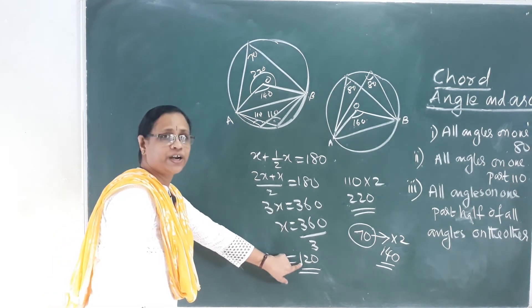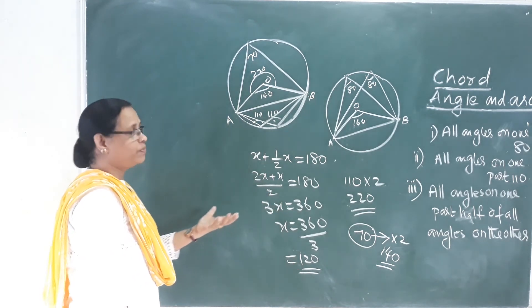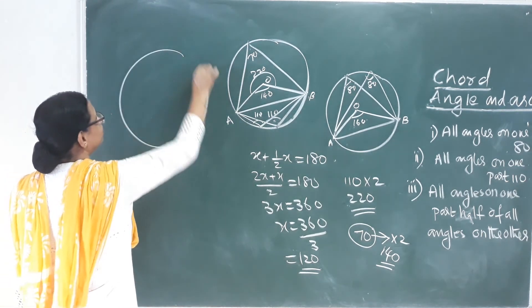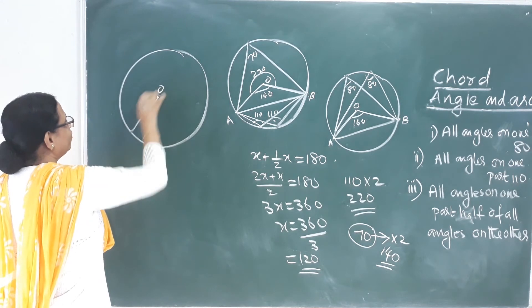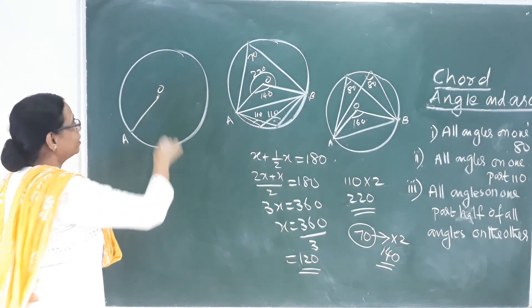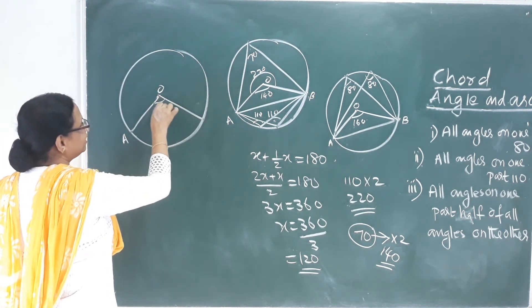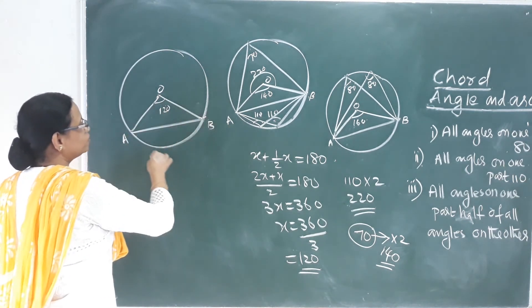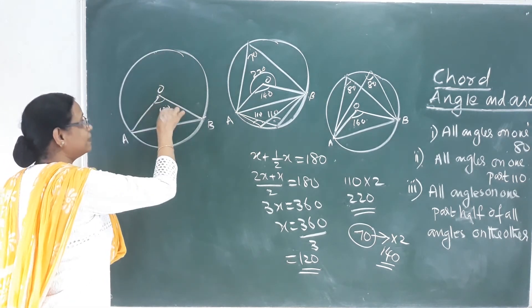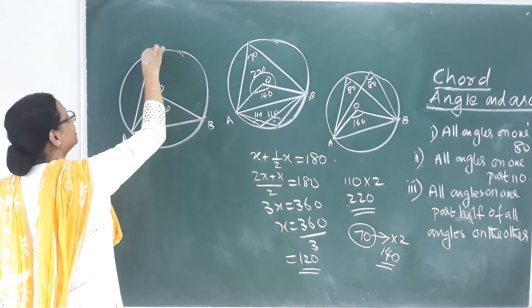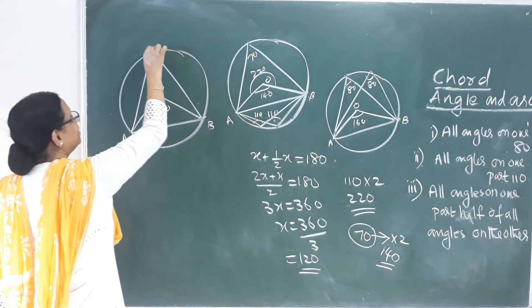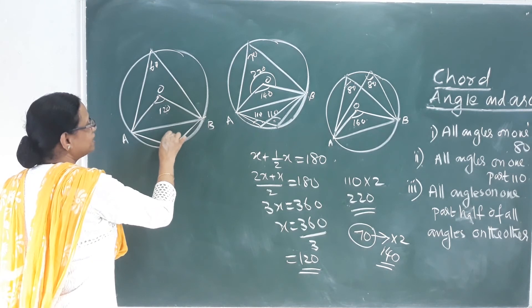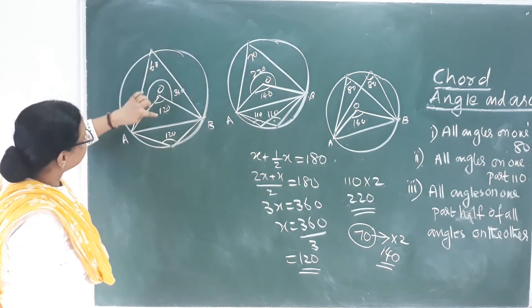So x equals 120 degrees, and the half angle is 60 degrees. For the central angle of 120 degrees, draw a circle, mark radius, and mark 120 degrees. The chord joins point B. The inscribed angle of the segment is double, confirming the relationship.